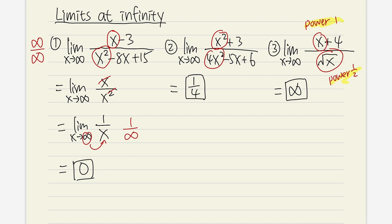You just really have to focus on these three situations when we are talking about a power function divided by a power function. Pick up the dominating part. If the power on the top is less than the power on the bottom, then you get zero. If the powers are equal, then you get the coefficient ratio. And if the power on the top is bigger than the power on the bottom, then you get infinity.